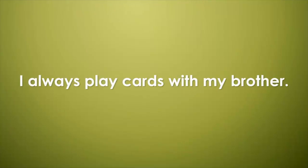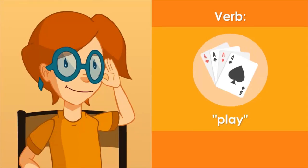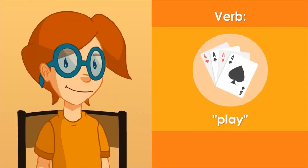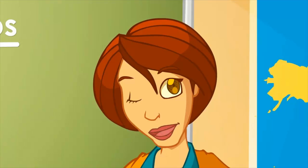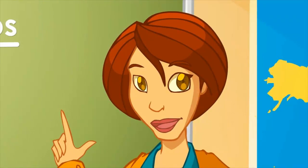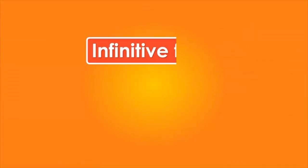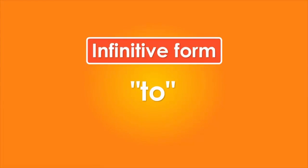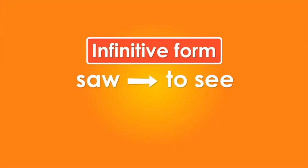What about in this sentence? 'I always play cards with my brother.' 'Play' — that's easy because I always play cards. Now I want you to name those verbs you found in the sentences. To name a verb, we use its infinitive form. The infinitive may be preceded by 'to' — as if we said that the name of 'saw' is 'to see.'